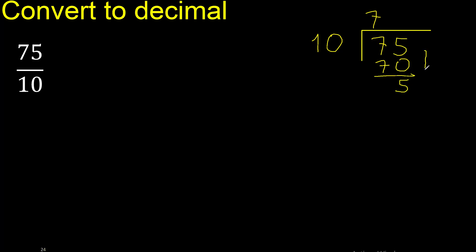Subtract — there is no more number, therefore always complete with 0 here. Point — add the decimal point, then bring down a 0.